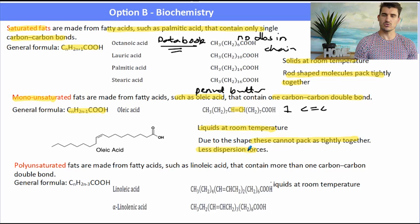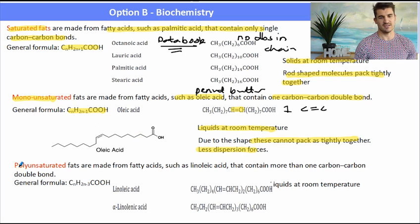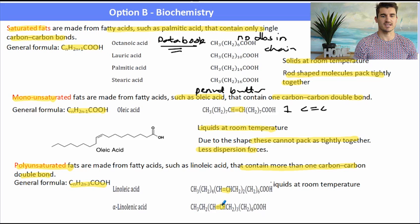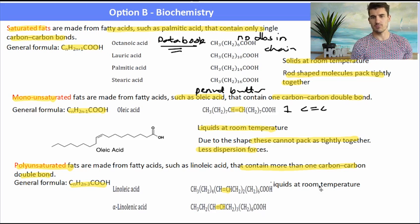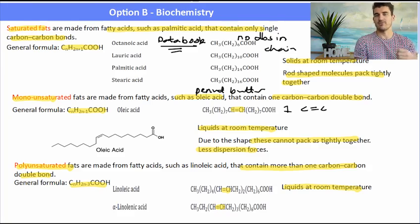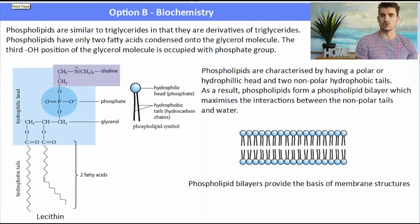Generally monounsaturated fats are liquids at room temperature because when they're offset from each other, they can't pack as closely together. A polyunsaturated fat such as linoleic acid contains more than one carbon-to-carbon double bond. You can work out how many double bonds by looking at a saturated fat and working out how many hydrogens it's missing — remember, for every double bond that's two hydrogens.